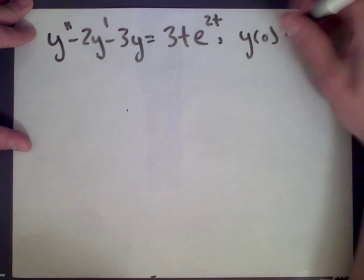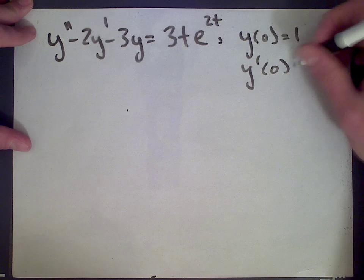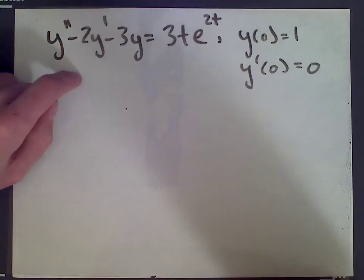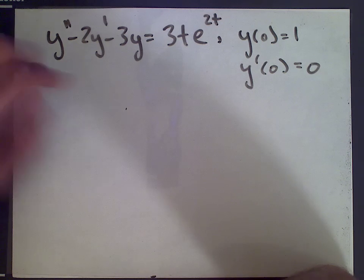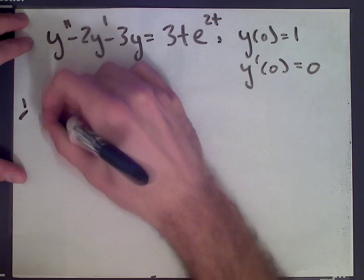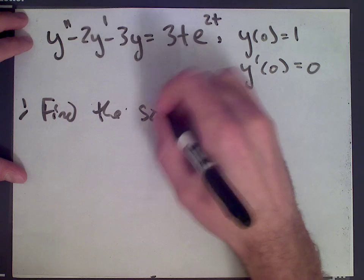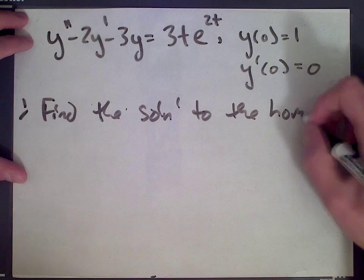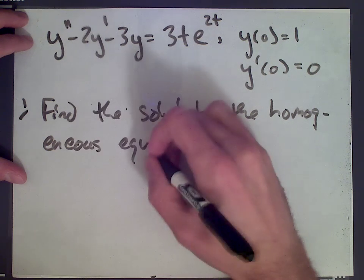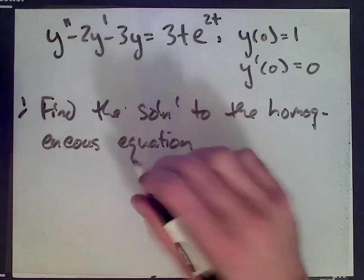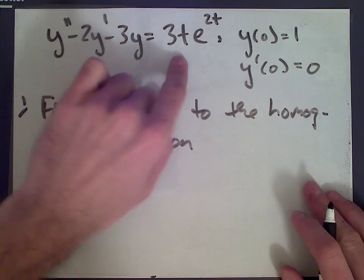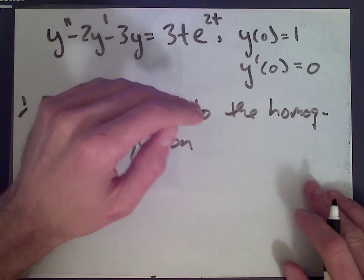y of 0 is 1 and y prime of 0 is 0. On the left hand side we have a second order differential equation and on the right hand side we have some function of t. Step one: find the solution to the homogeneous equation, given by setting the right hand side equal to 0. We'll get a homogeneous solution and then a particular solution that equals 3t times e to the 2t, then add the two to get the most general solution.